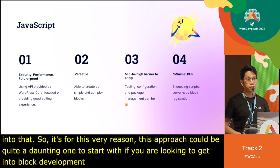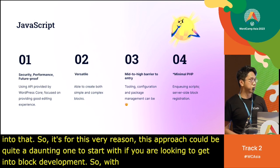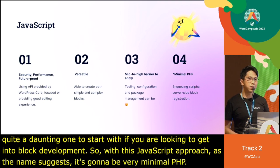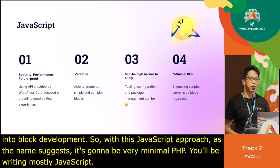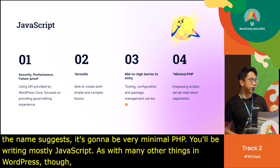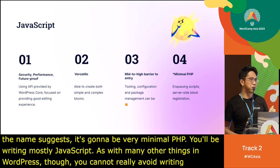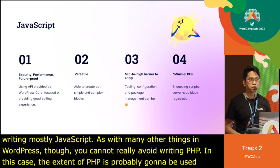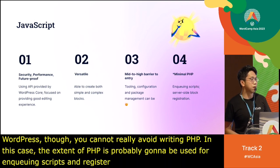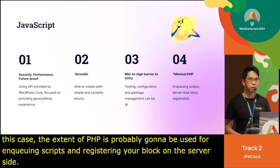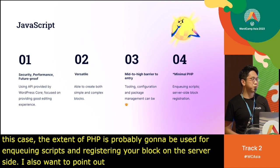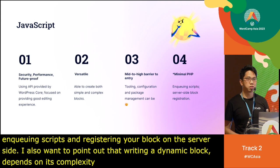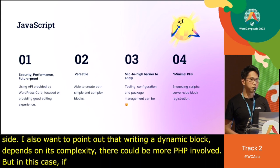With this JavaScript approach, as the name suggests, it's going to be very minimal PHP — you'll be writing mostly JavaScript. As with many other things in WordPress, you cannot really avoid writing PHP entirely. In this case, PHP will probably be used for enqueuing scripts and registering your block on the server side. If you're writing a dynamic block, depending on its complexity, there could be more PHP involved, but for basic blocks it will be predominantly JavaScript.